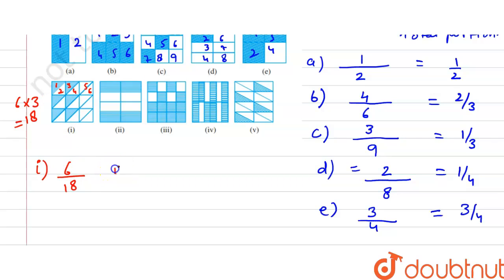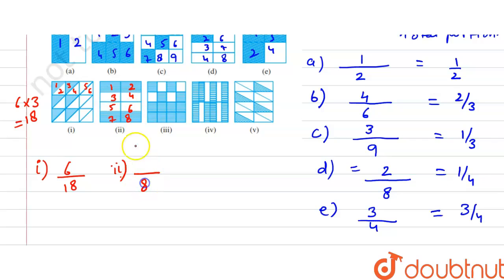In the second figure of the second set, the total count is 1, 2, 3, 4, 5, 6, 7, 8 — total is 8, and the shaded ones are 1, 2, 3, 4 — so it is 4/8.